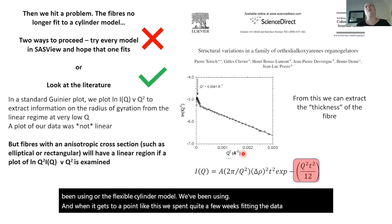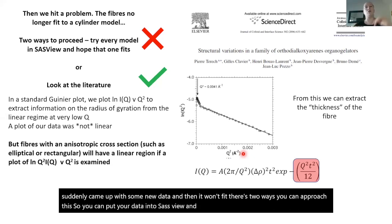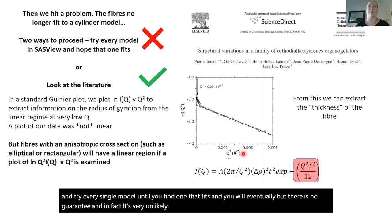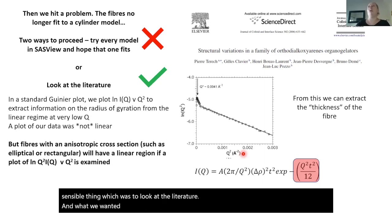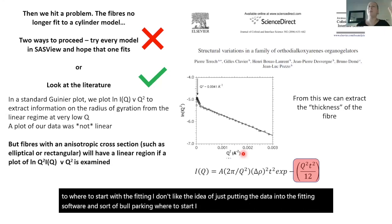After spending quite a few weeks fitting the data properly, suddenly the new gel-state data wouldn't fit. There are two ways you can approach this: you can go through all of the drop-down menus in SasView and try every single model until you find one that fits — and you will eventually — but there's no guarantee that any model you randomly pick will be even remotely physically relevant. So what we decided to do was the much more sensible thing: look at the literature for a guide as to where to start with the fitting. I wanted an idea of what I was looking at, and I wanted to go back to what you would do if you didn't have something like SasView — just plotting the data in different ways to understand the system.